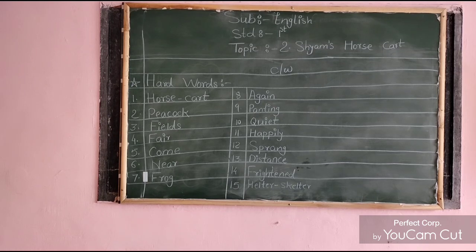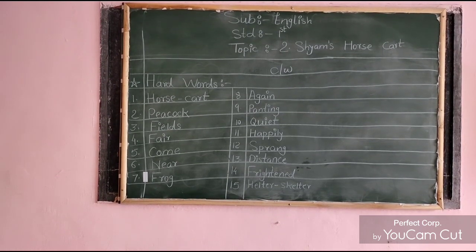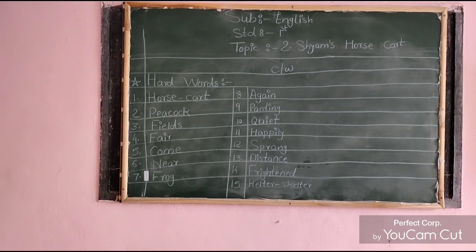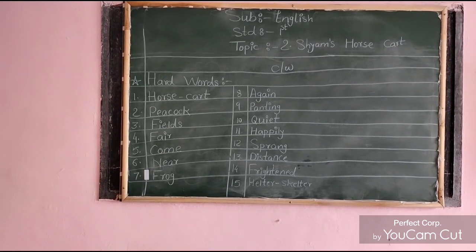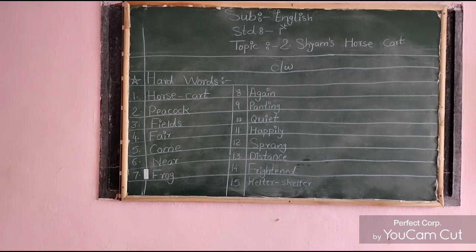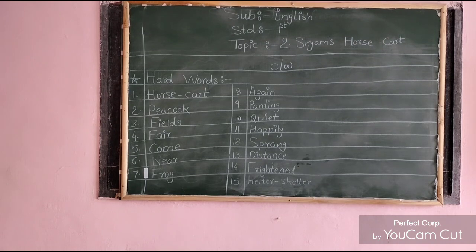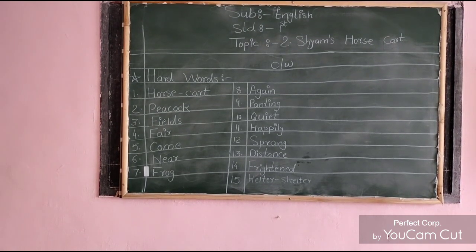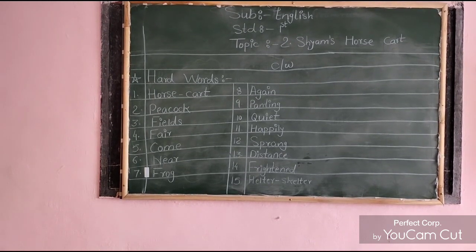With the help of textbook, I already explained this lesson with the help of 2 videos. Now with the help of blackboard, I am going to give you hard words and question answers related with this lesson. Look at the hard words. I wrote 15 hard words on the blackboard. This is your CW. After watching the video, write all hard words in your notebook in good handwriting.